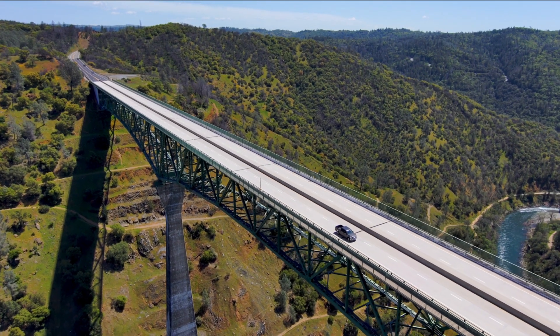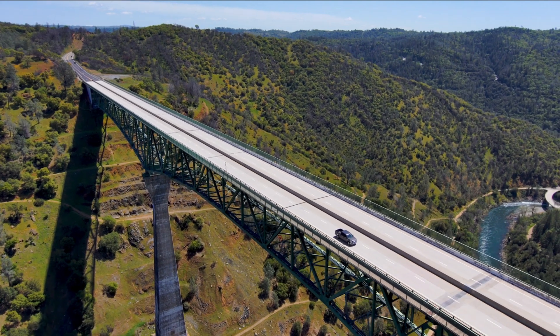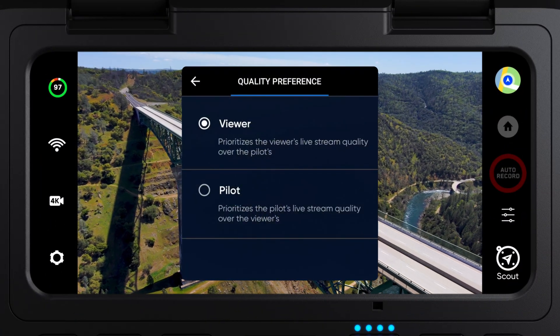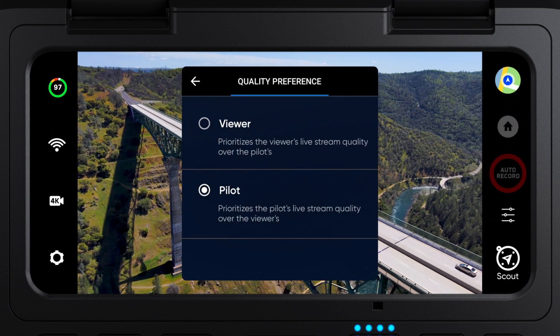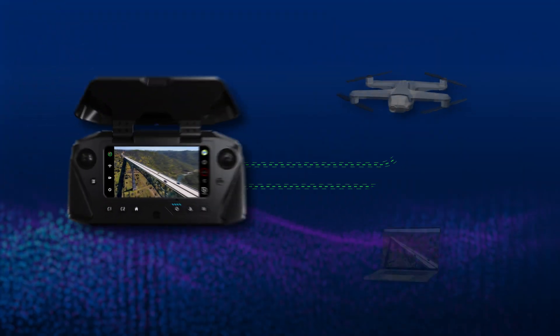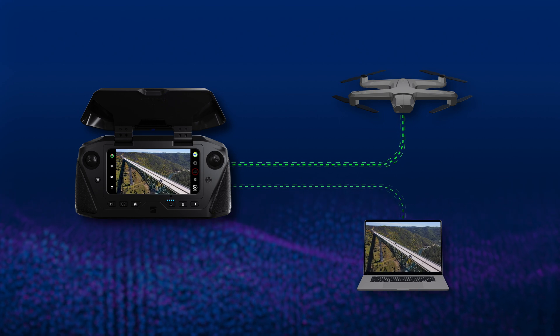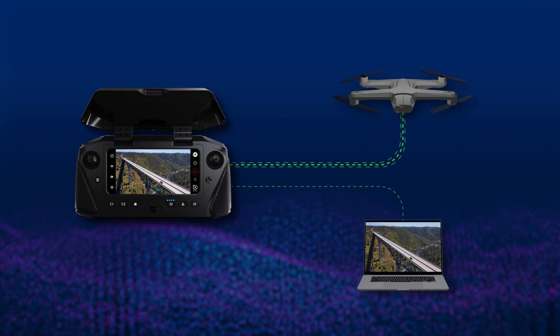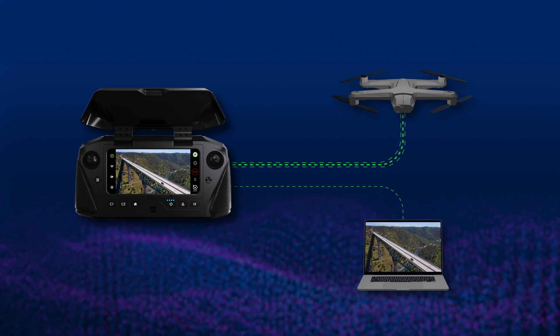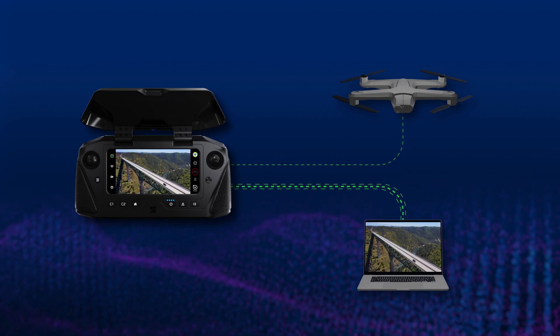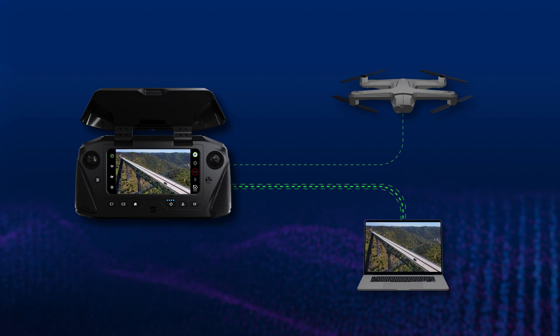We also have some exciting updates for Skydio Cloud. Now you can choose whether to optimize video quality for pilots or for viewers. Simply go into the video settings on your controller and select which one you want. If you optimize for the pilot, the connection between the controlling device and drone will be prioritized. If you optimize for viewers, the live streaming connection will be prioritized, resulting in better quality for live stream viewers.